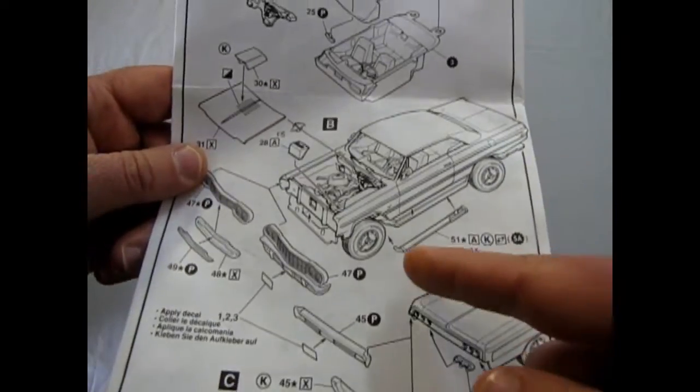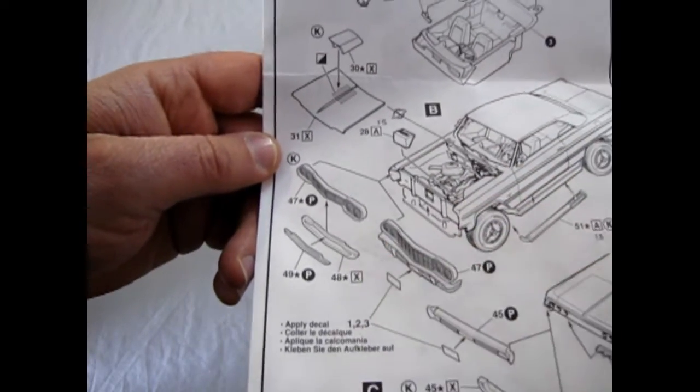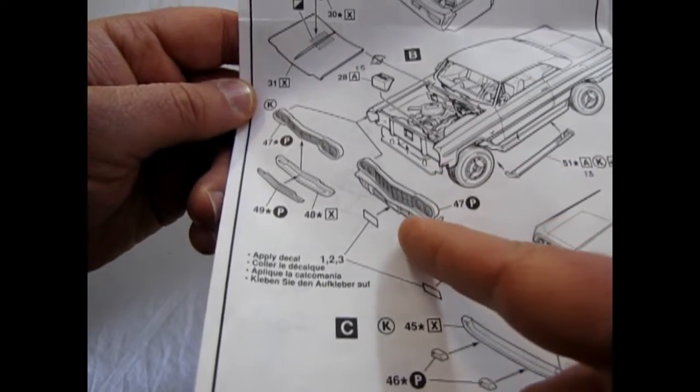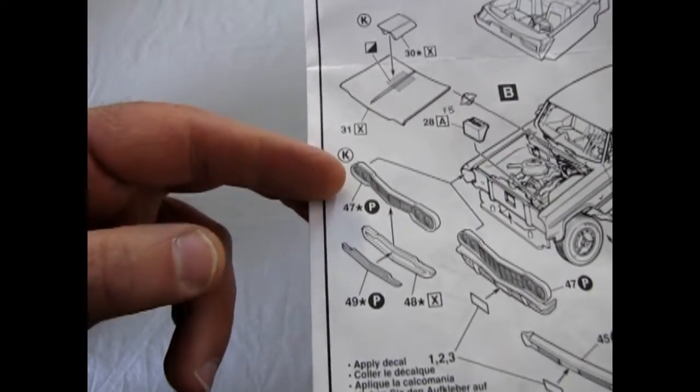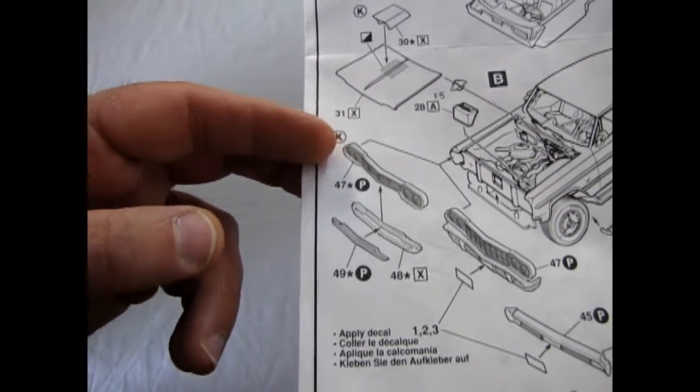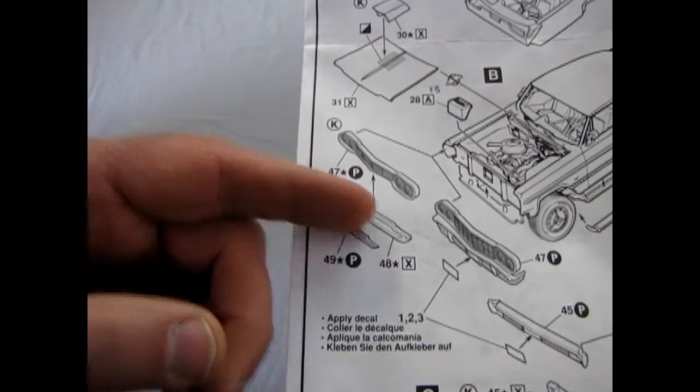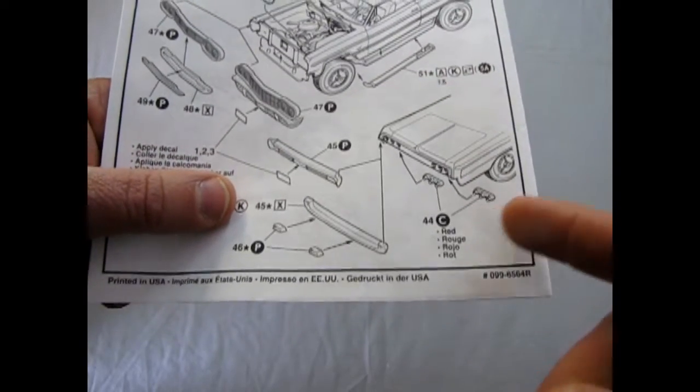So here is the stock grill with a bumper molded underneath all chrome plated. And here's the custom so they cut the grill down they put in this thing almost like a 64 T-bird with this insert popping in.